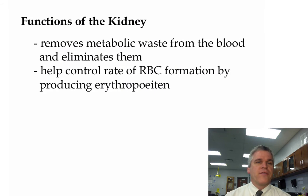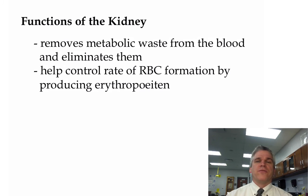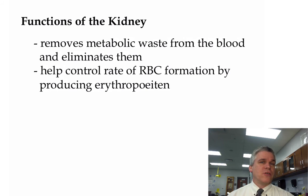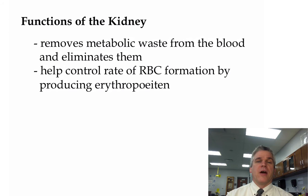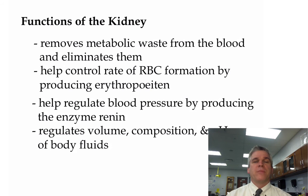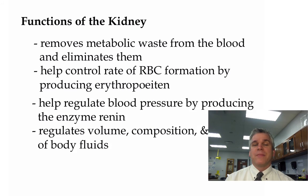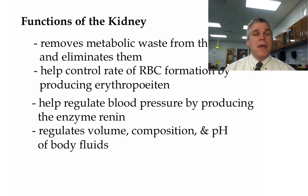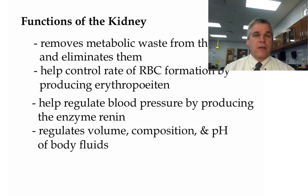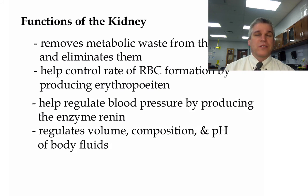So let's take a look at what the kidneys do. First of all, they remove metabolic waste from the blood and eliminate them — it's going to filter out the blood, take all those waste products made by our cells, and put them into the urine so we can get rid of them. Kidneys also produce hormones. One of the hormones produced is erythropoietin — we talked about this before. They help control how fast red blood cells are being made. They help regulate our blood pressure by producing an enzyme called renin. Our blood pressure can be affected by things like how much blood we have — the more blood in our vessels, the greater our blood pressure. It also regulates the volume of blood and the composition of blood, so what sorts of things are in the blood.